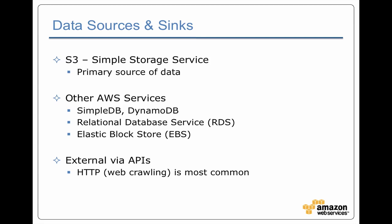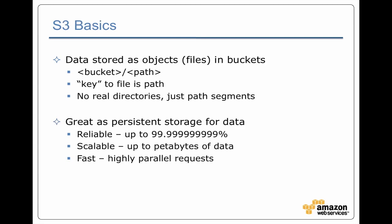There are other Amazon services that you can use as both your data source and also a sink where you write data to. For example, SimpleDB or more recently DynamoDB are key-value stores. There is the relational database service and Elastic Block Store, which is persistent SAN-like storage that you're attaching directly to the slaves in your cluster. If you're doing web crawling, you're essentially using an external API making HTTP requests to pull data in. The most common source and destination is S3.